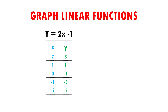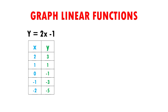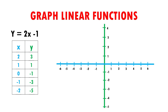Once we have the values of y, we are going to graph in our Cartesian plane. Here I have my Cartesian plane. If you do not know how to graph, I recommend you to watch my Cartesian plane video. I will explain the first point. We have 2, 3. This means that on the x-axis, I will find number 2, and here it is. And on the y-axis, I will find the number 3, and done. Here it is.